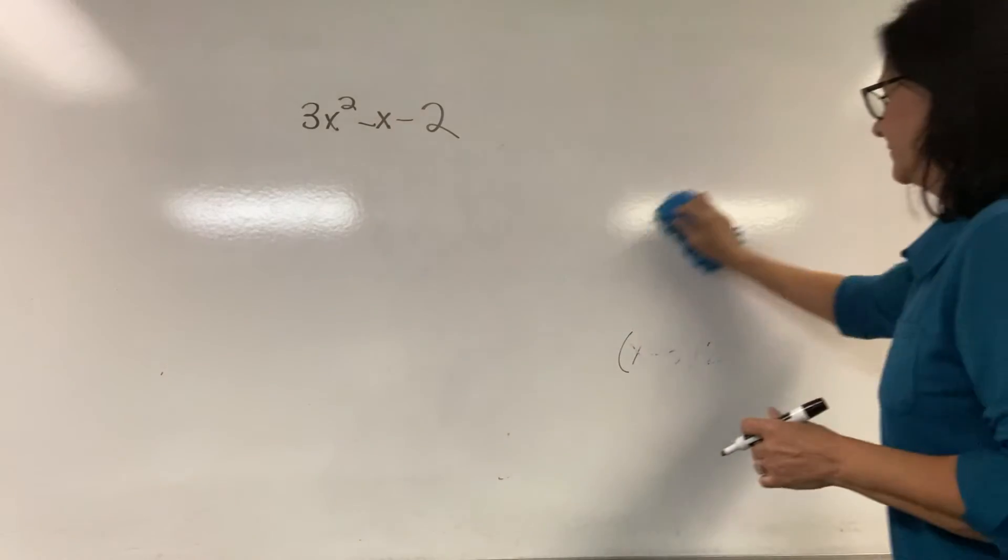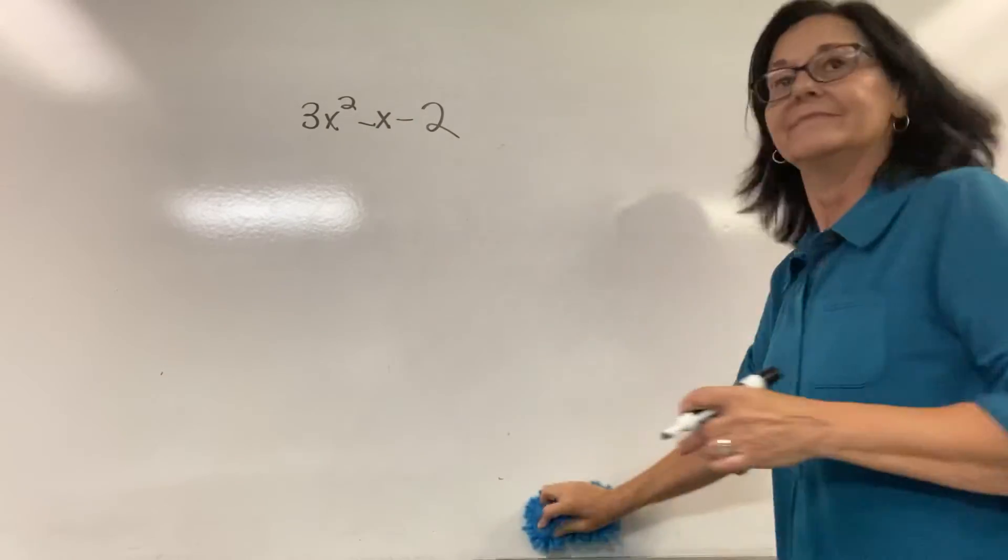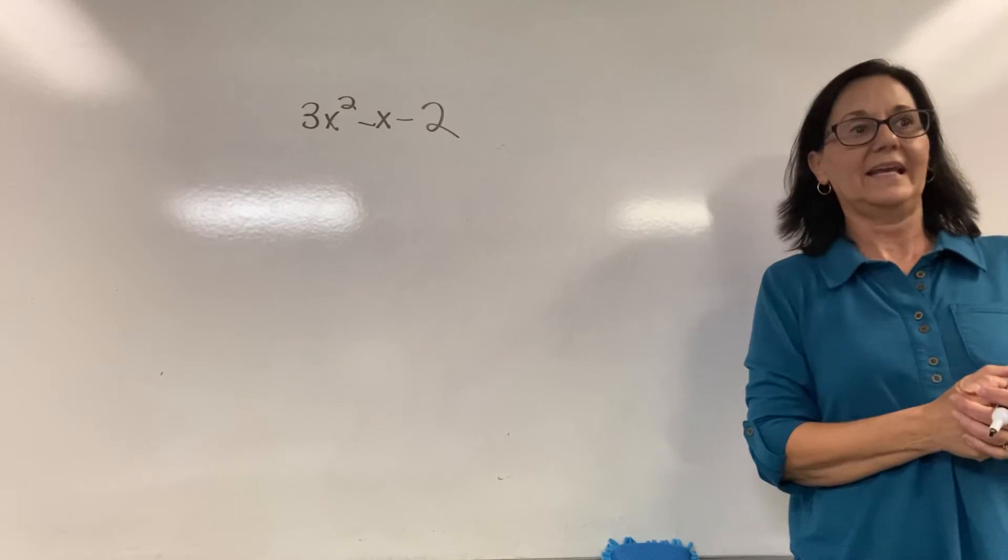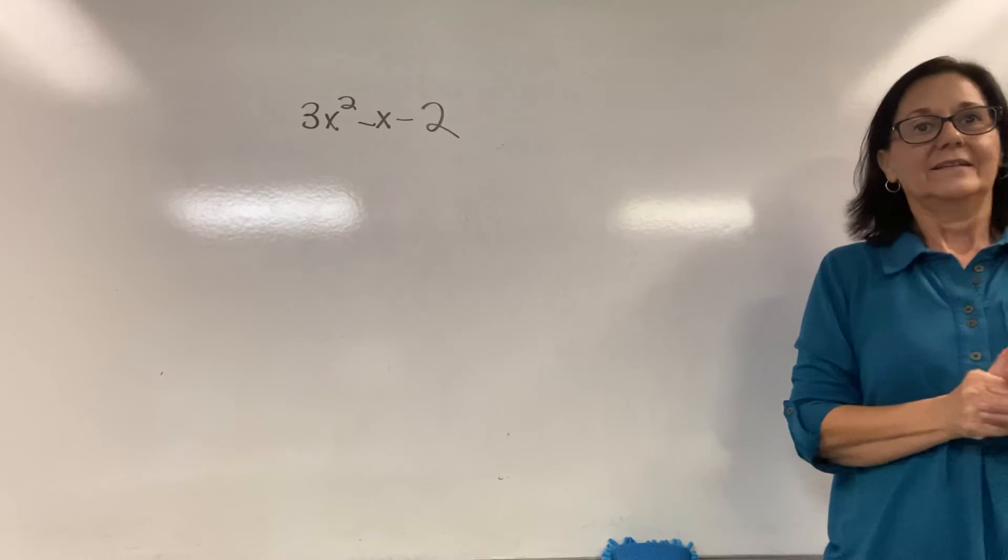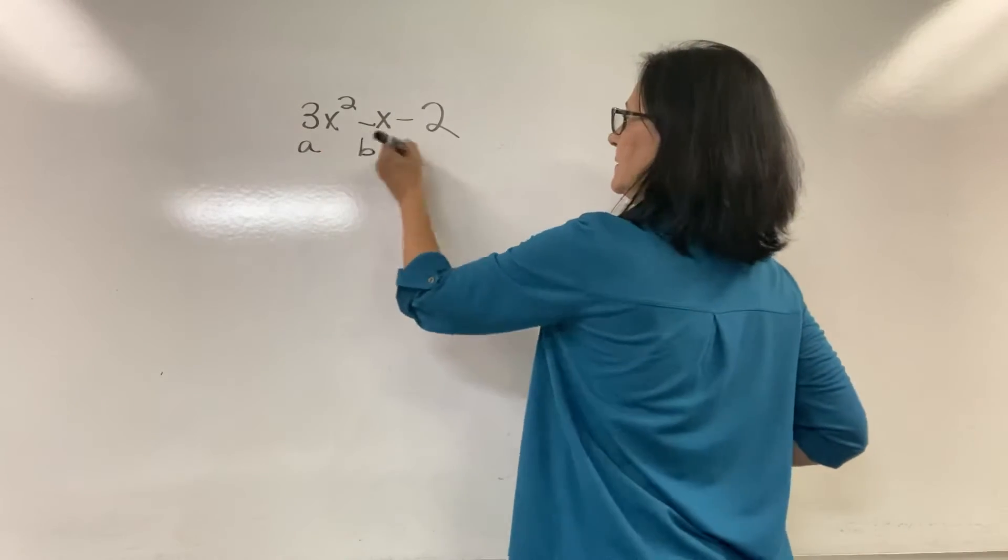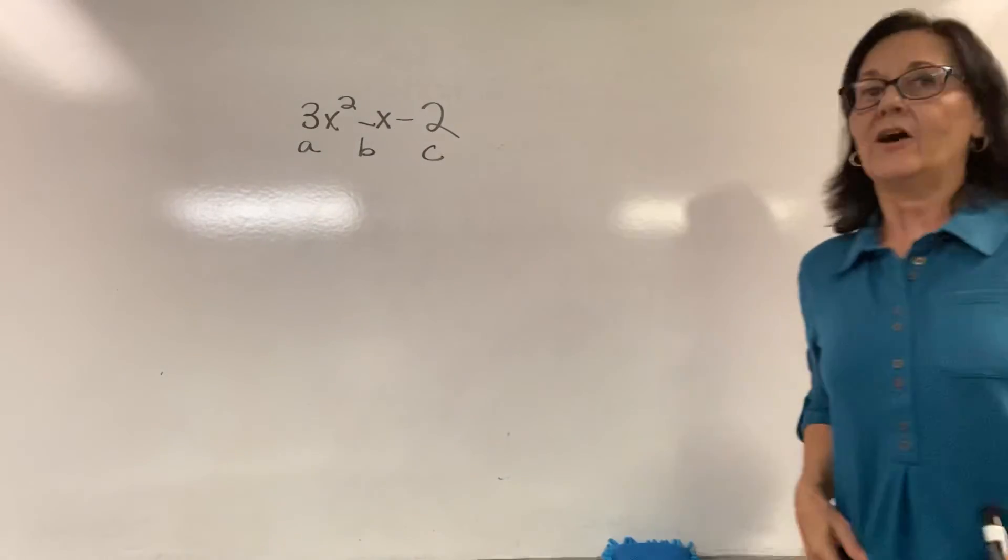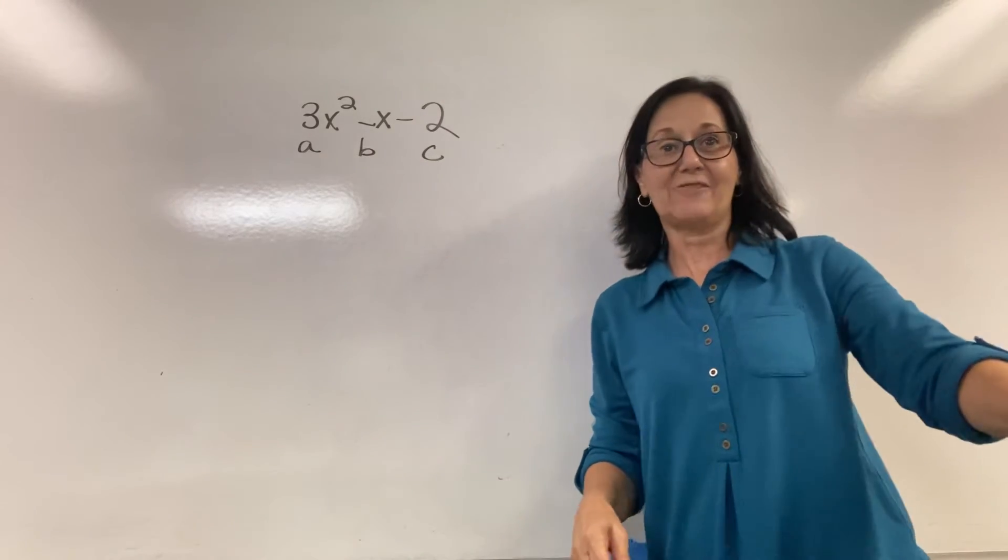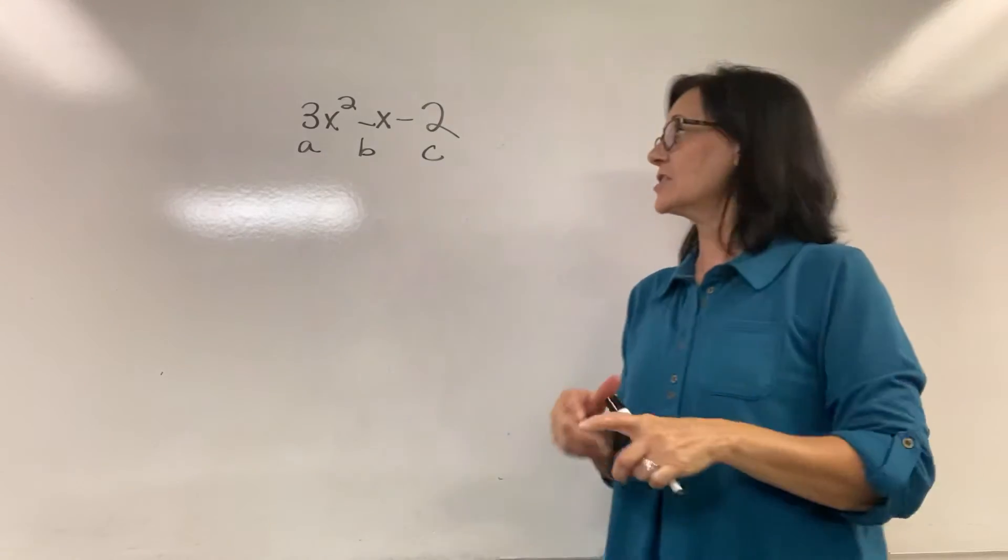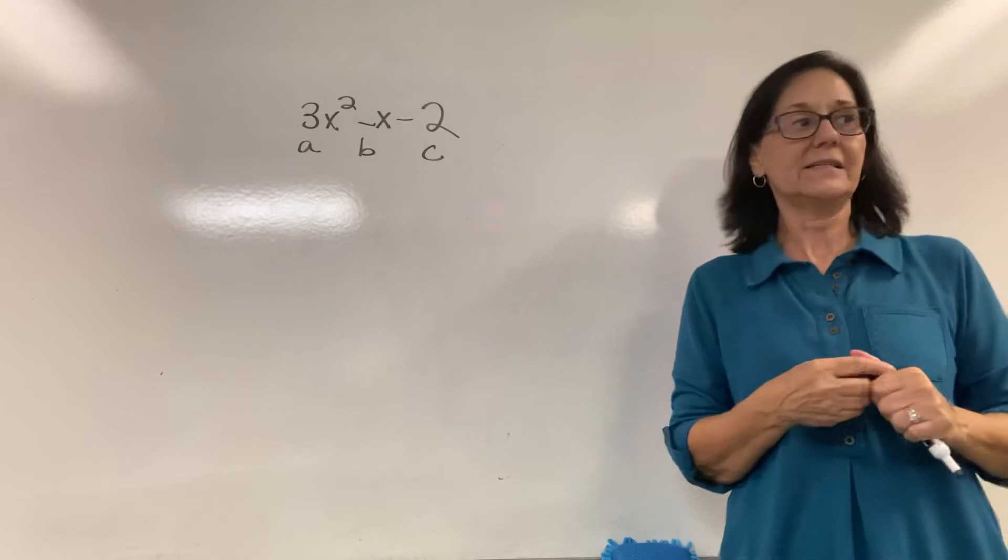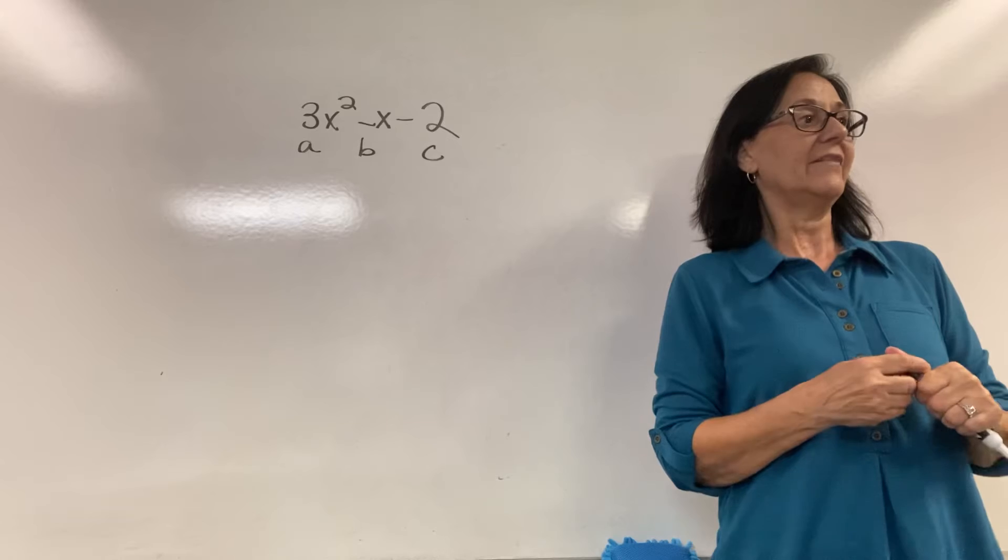We're about to walk through those steps again. What's the first thing we do? Put it in proper form. Is it? It is. Label a, b, and c. A is what? A is 3. The value of a is 3. B is negative 1. And c is negative 2.